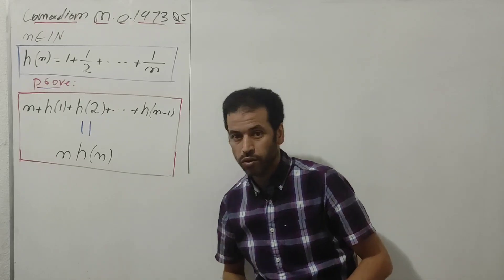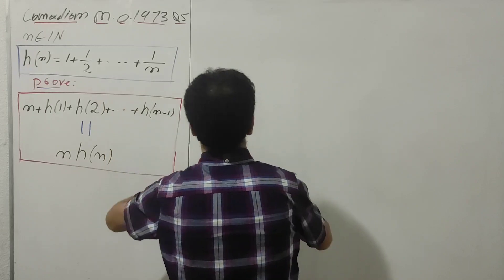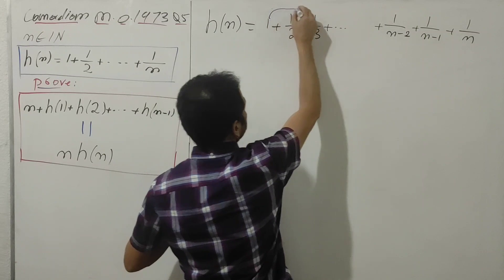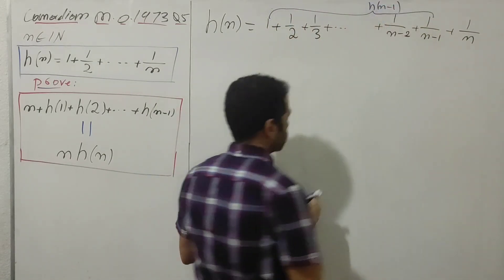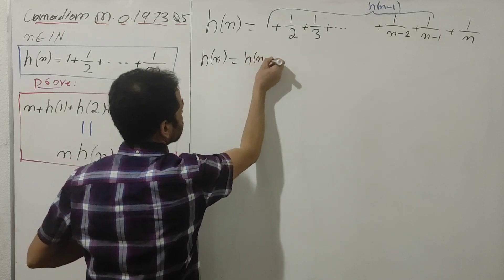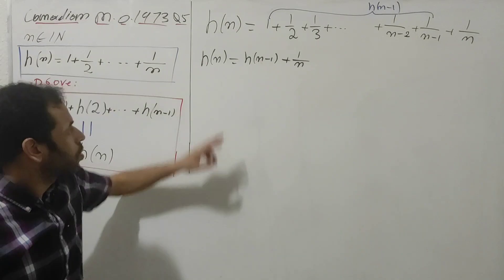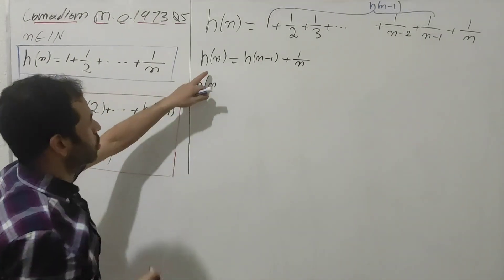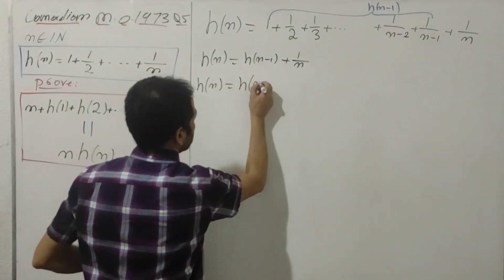Now let's jump into the solution. If you take a look at all terms just from here to here, this is H(n-1). So I will have H(n) equals H(n-1) plus the last term, which is 1/n. So this sequence can be written in this pattern.